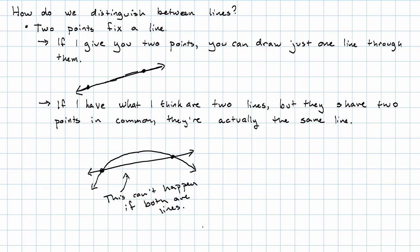So that's one way to think about lines, right? If I have two points, I can always draw exactly one line through them. There's another way to approach this, though.